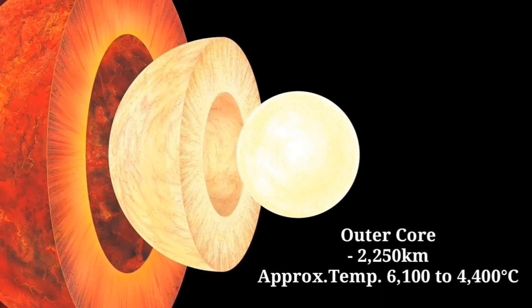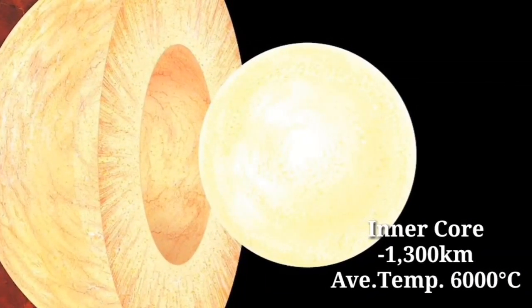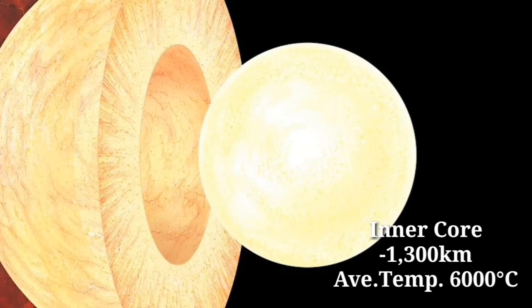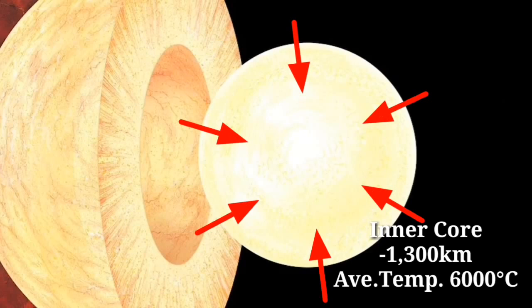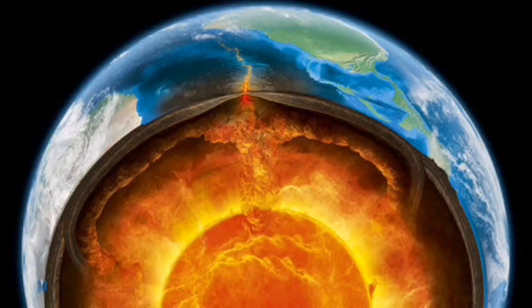Below the mantle is the outer core, which has an average thickness of 2,250 kilometers and an approximate temperature of 4,400 to 6,100 degrees Celsius. Since iron melts at 3,000 degrees Celsius and nickel at 2,900 degrees Celsius, the outer core is molten. At the center of the Earth is the inner core, which has an average thickness of 1,300 kilometers and an average temperature of 6,000 degrees Celsius. The inner core is solid because the great pressure at the center of the Earth reaches 100 billion pascals, forcing the iron and nickel atoms together and keeping them in crystalline form despite the high temperature.